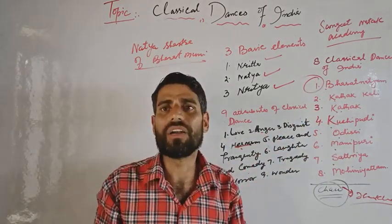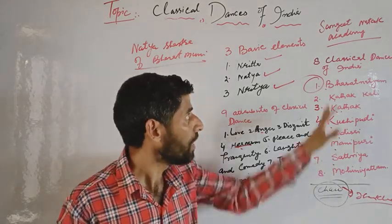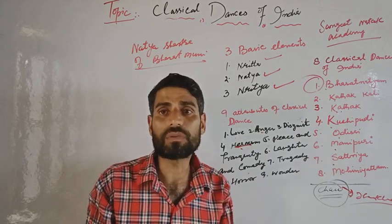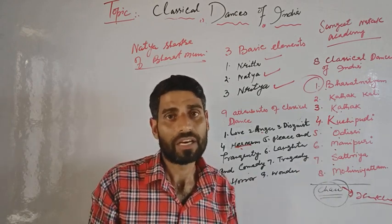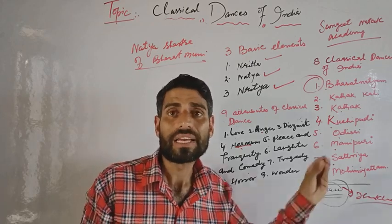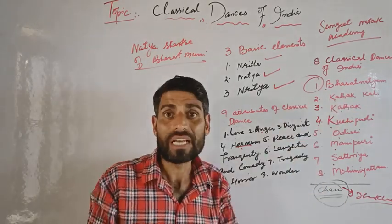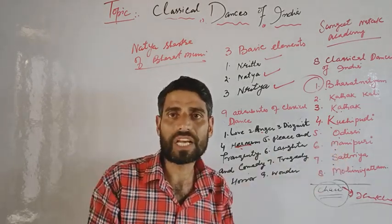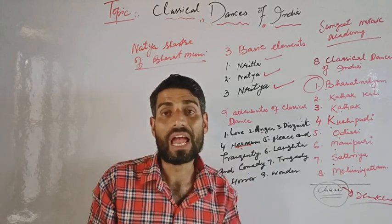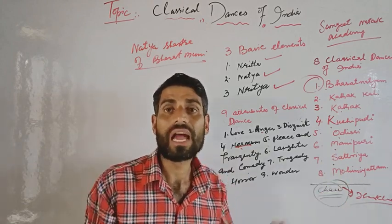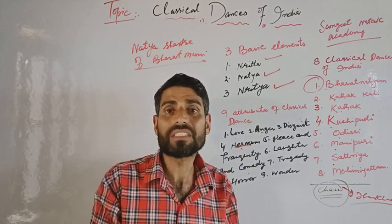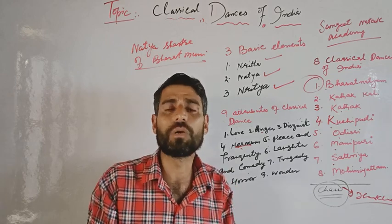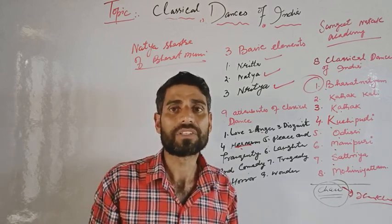From the 10th century onwards, this dance form was performed in the Brihadeeswara Temple, which was built by the Chola king Rajendra. The name Bharatnatyam comes from: Bha for Bhava (mood), Ra for Raga (music), Ta for Tala (rhythm), and Natya, which is a Sanskrit word for drama.